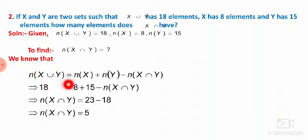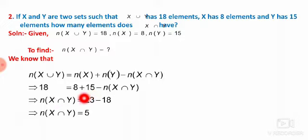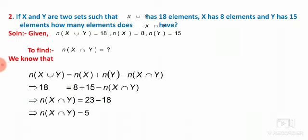Substituting: 18 equals 8 plus 15 minus N of X intersection Y. Rearranging, N of X intersection Y equals 8 plus 15 minus 18 equals 23 minus 18 equals 5. Therefore the number of elements in X intersection Y is 5.